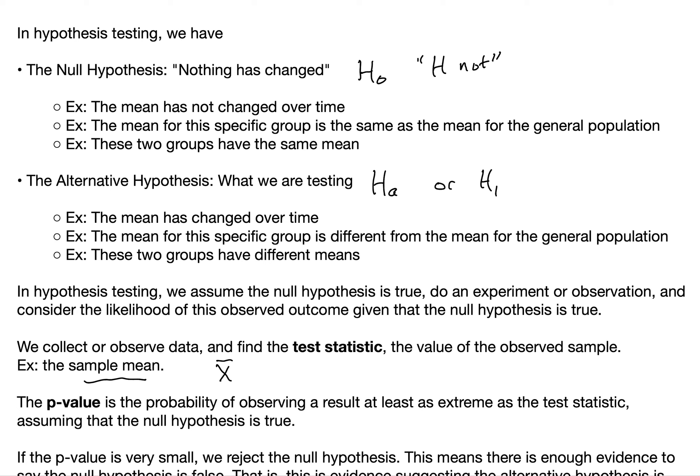Generally, the null hypothesis is that nothing has changed, and it can be denoted as H0, which is read out loud as H-naught. Some examples of the null hypothesis would be: the mean has not changed over time, so a previously accepted population mean still holds today; or the mean for a particular group is the same as the mean for the general population; or two groups have the same mean.